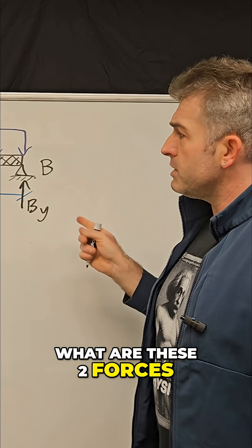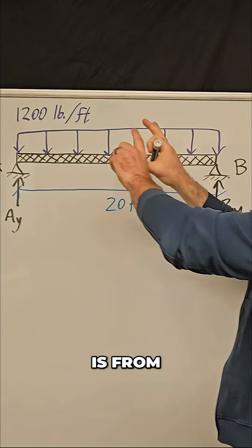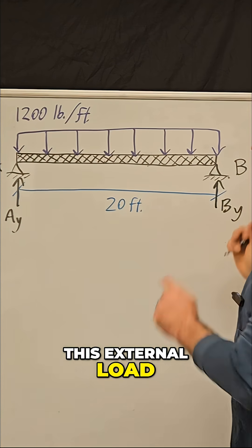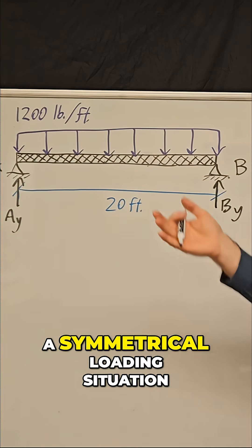So what are these two forces? Well, for a problem like this, it's very simple. Whatever the total load is from this external load, it's just going to be one half of that at each of the supports because we have a symmetrical loading situation.